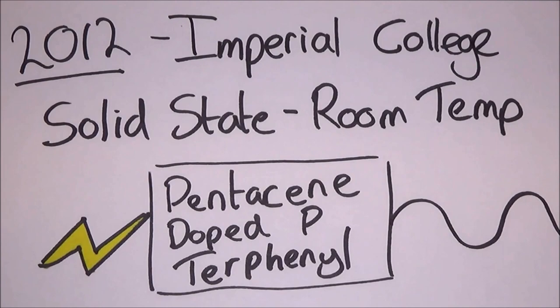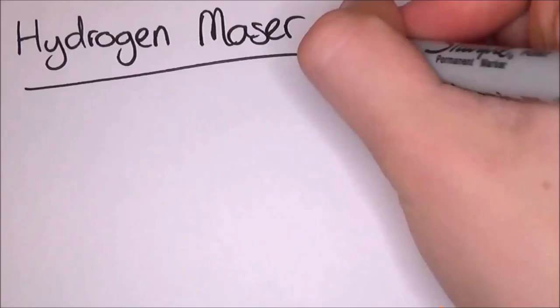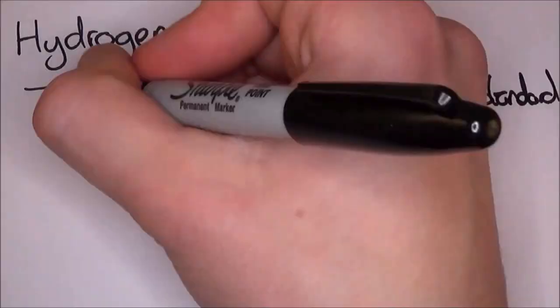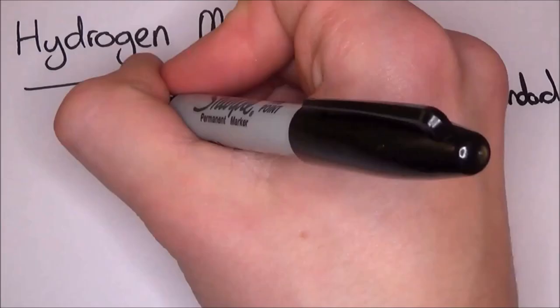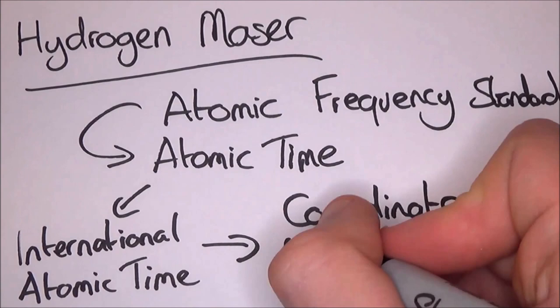There are of course many different types of masers. Hydrogen masers are the most useful. This is being used for the atomic frequency standard. This, plus other types of atomic clocks, are being used for atomic time. International atomic time is a highly precise atomic coordination time standard, which is the basis for Coordinated Universal Time, or UTC.